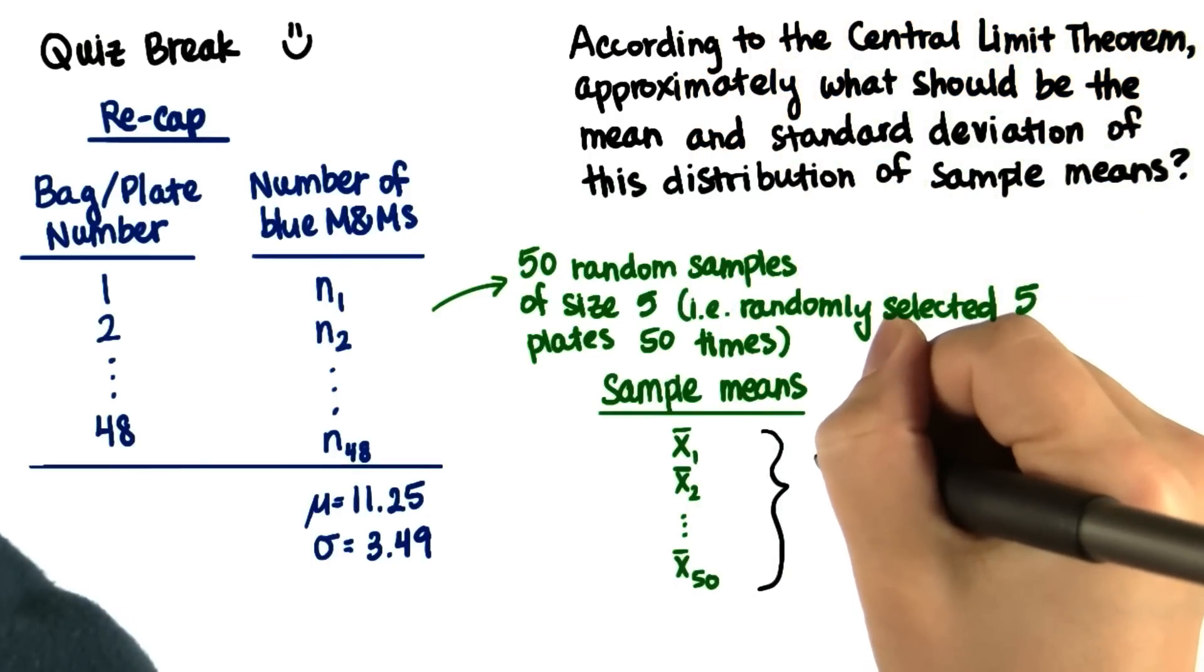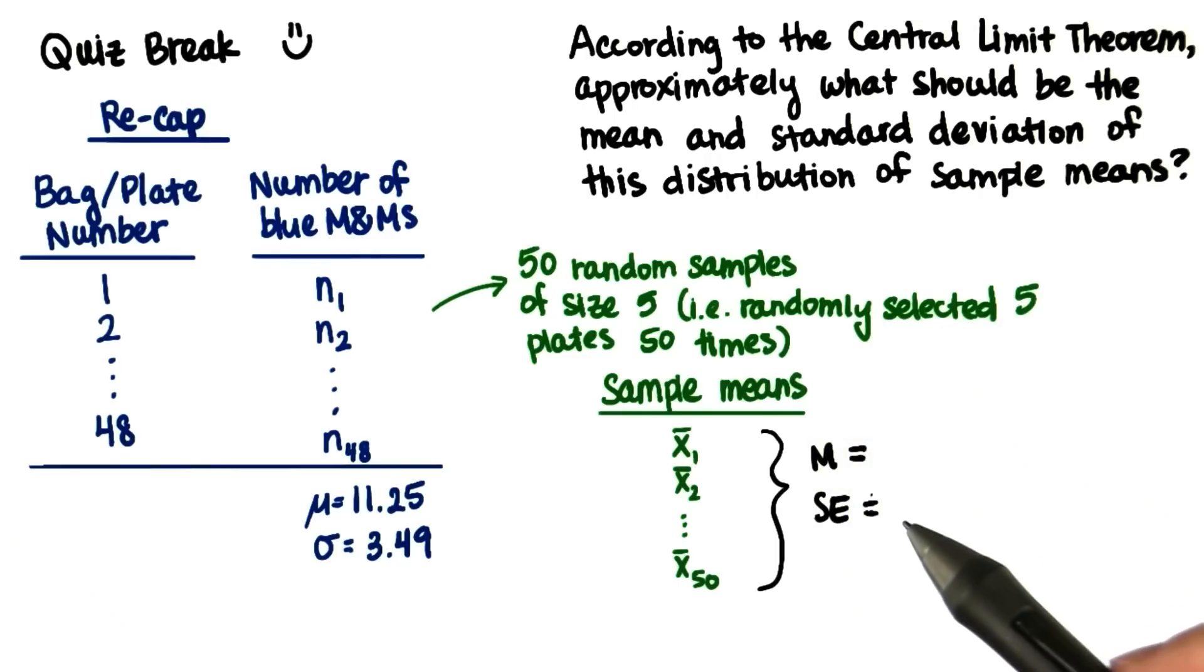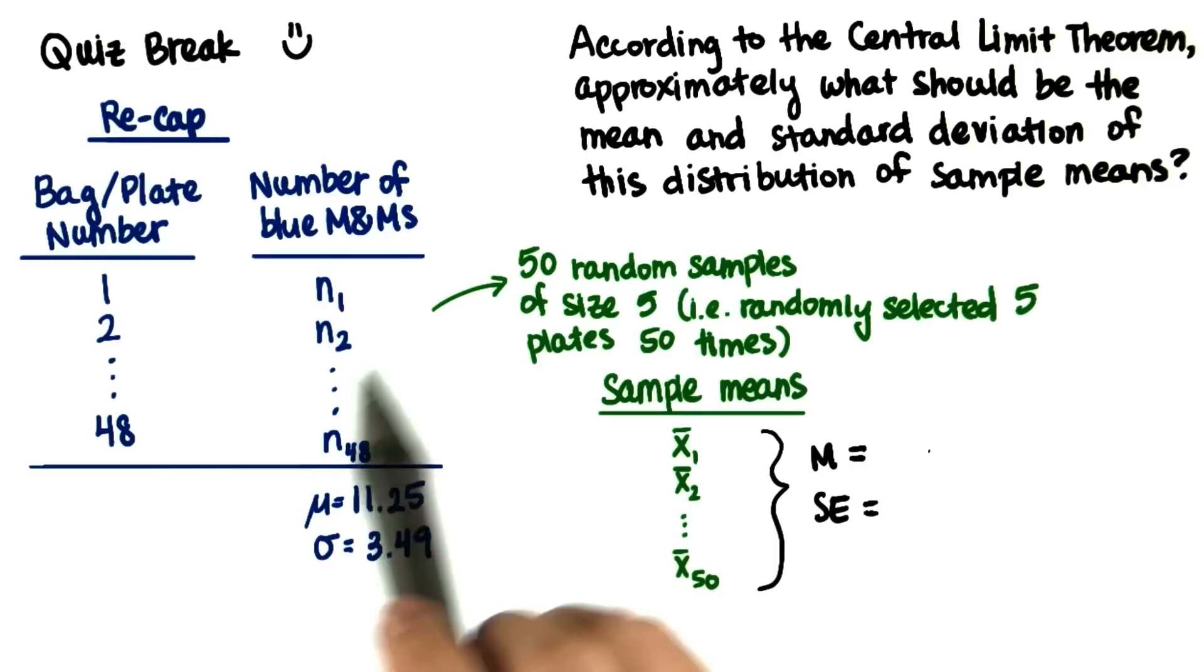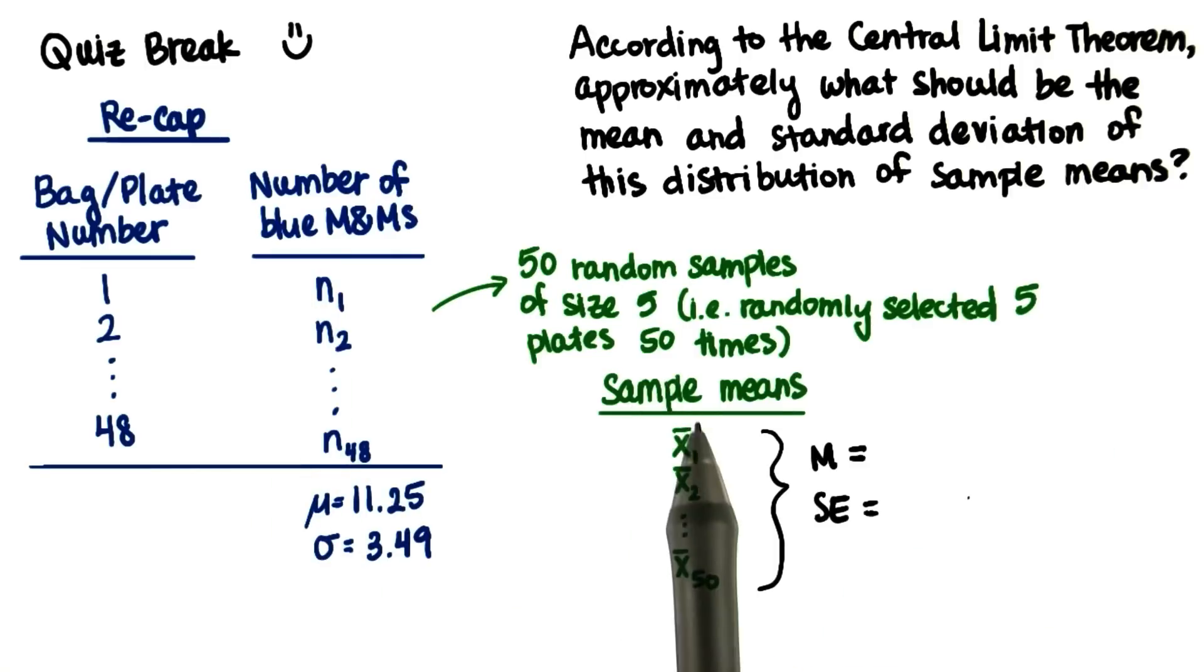So write your answer here. When you calculate these, remember you're calculating the theoretical probability, which is based on using every possible sample of size 5 from this population. But here they're using only 50 samples of size 5.